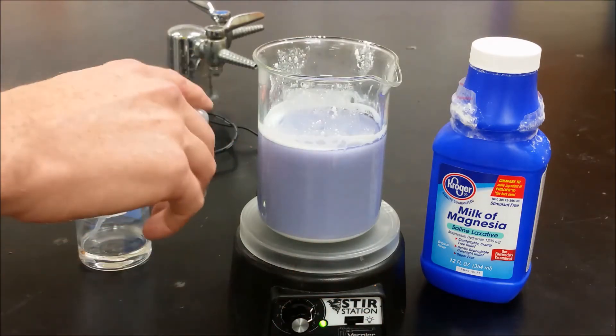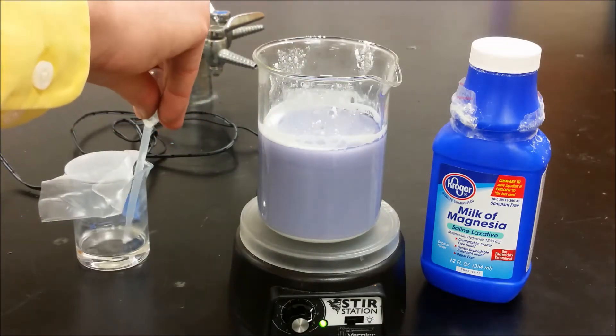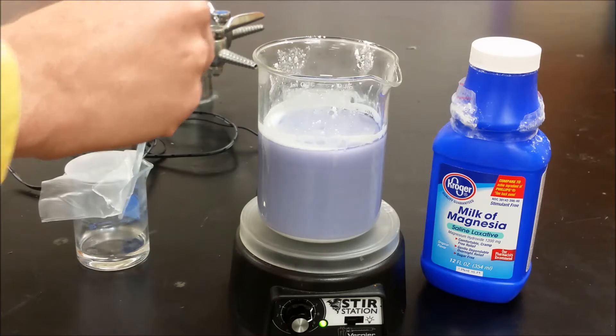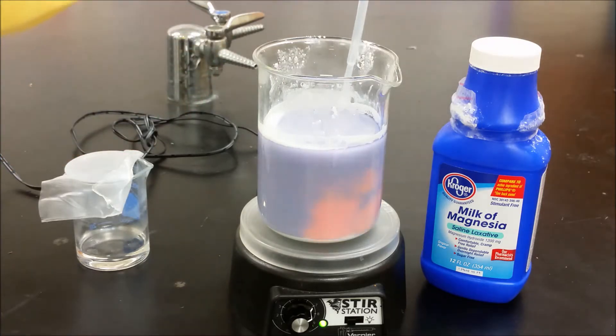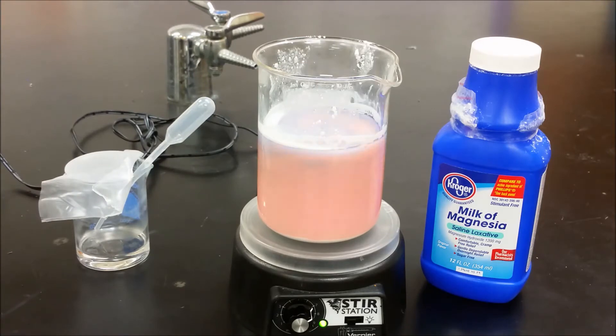Over here we have hydrochloric acid, which is very soluble in water. When we add a splash to the mixture, the Universal Indicator quickly changes to an acidic color.